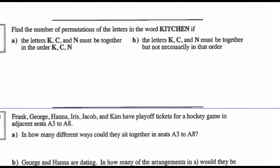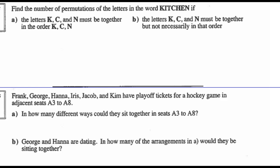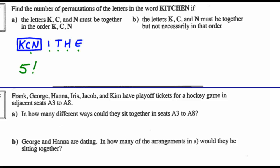Example 5: Find the number of permutations of the letters of the word 'kitchen' if the letters K, C, N must be together and in that order. The group KCN is one element, plus I, T, H, and E — giving 5 elements total. Those can be arranged 5 factorial ways. Unlike the previous question, KCN can only be arranged in one order — it must be K, C, N — so we multiply by 1. Therefore 5 factorial × 1 = 5 factorial = 120 arrangements.